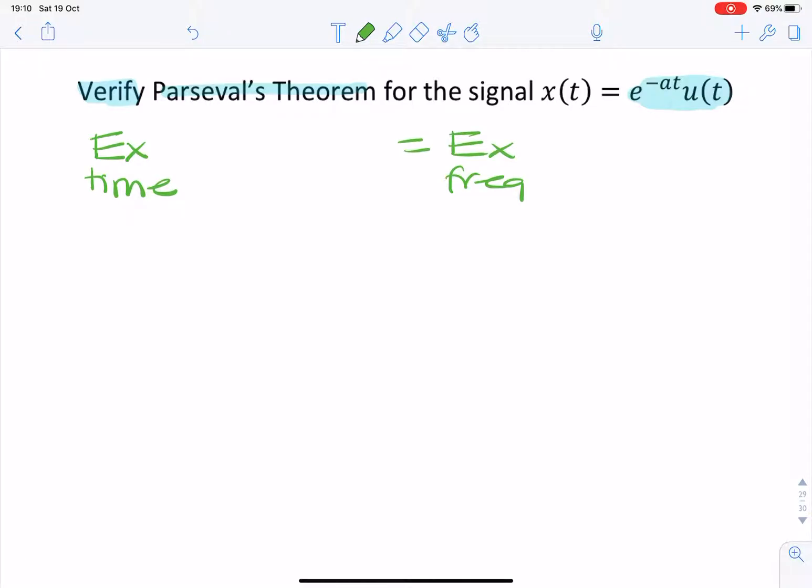And the value of this energy is simply calculated by integrating the signal squared. And in the frequency, it's the same, except you divide by 2 pi.